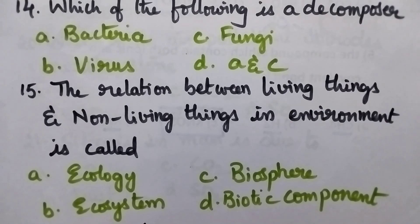The relation between living things and non-living things in environment is called A: Ecology, B: Ecosystem, C: Biosphere, D: Biotic component.